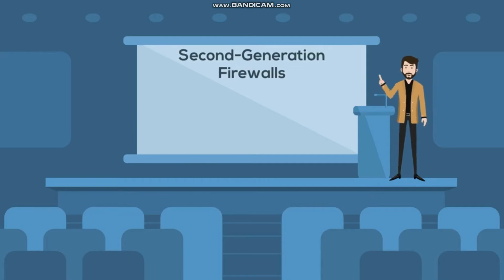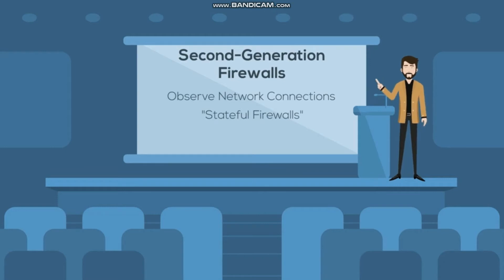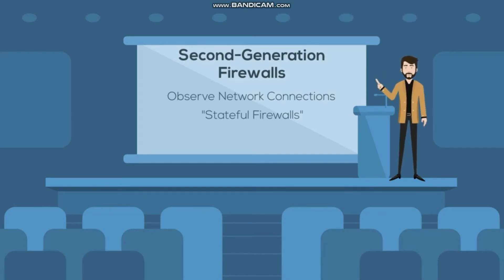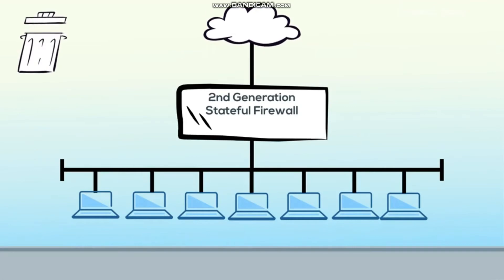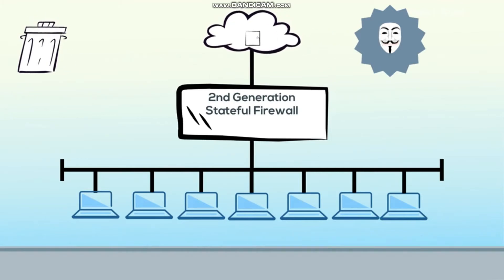The second generation of firewalls were designed to add more functionality by observing these network connections over time. These second generation firewalls were also known as stateful firewalls because they would watch as new network connections were being made and then continuously examine the conversation between the endpoints. If a connection behaved improperly, then the firewall would block that connection, and any packets not belonging to a known conversation were dropped.